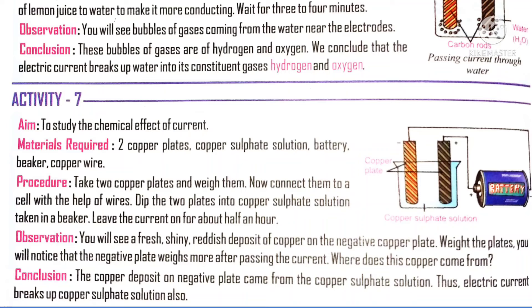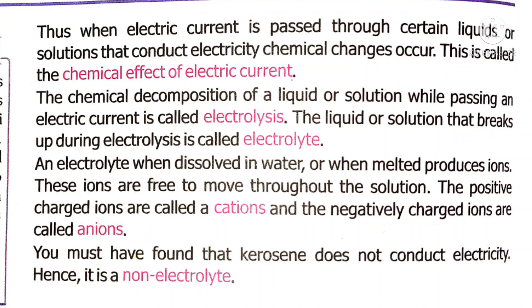Copper is positive charge and sulfate is negative charge. Positive ions migrate to the negative rod and negative ions migrate to the positive rod. Here, copper ions from the solution migrate and deposit on the negative copper rod, giving it a reddish-brown color coating. If we replace the copper sulfate solution with kerosene or distilled water, this chemical effect will not take place because those solutions do not conduct electricity due to the absence of ions.